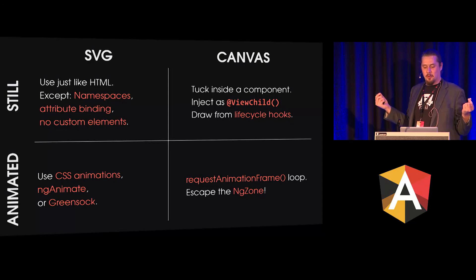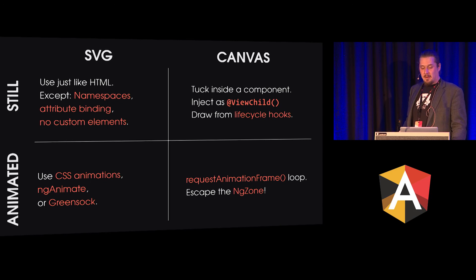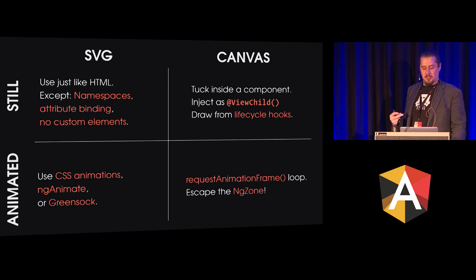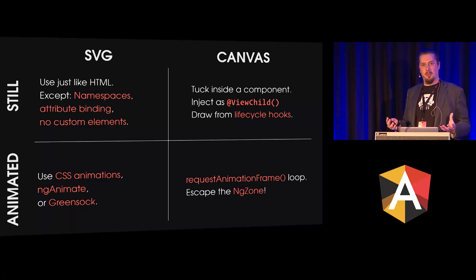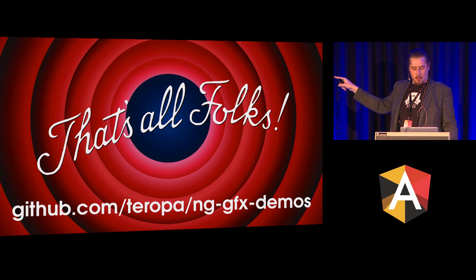In summary, we have SVG and canvas for 2D graphics, both of which work with Angular. SVG is arguably easier because it works like HTML and integrates well with components — there are just a few things to remember based on DOM differences. Canvas can be put inside a component and drawn on from lifecycle hooks. For animation, we can use CSS, ngAnimate, or third-party libraries like GreenSock, which is often actually preferable. For canvas there's really nothing but requestAnimationFrame, which can easily be set up in a loop inside a component — just remember to run it outside the NgZone. All the code examples are in the git repo if you want to reference something.